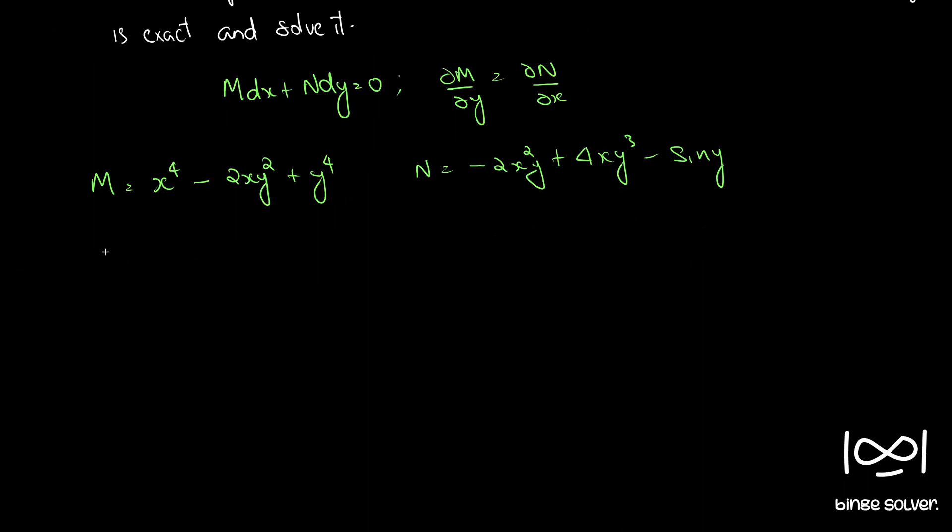Now ∂M/∂y = -4xy + 4y³, and ∂N/∂x = -4xy + 4y³.